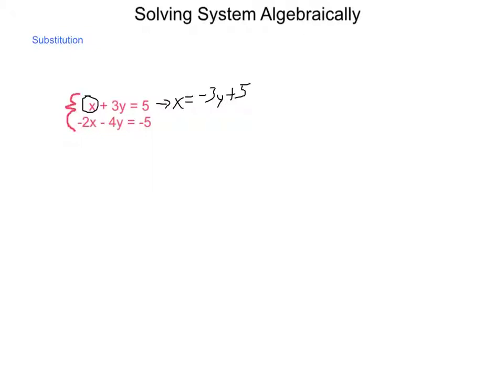Then I'm going to take that new value for x and substitute it into the other equation where x is located. So I now have -2 times the value of x, which is -3y + 5, minus 4y equals -5. Now I have an equation of only one variable, and I can solve for that. I'm going to distribute my negative 2. I end up with 6y - 10 - 4y = -5.